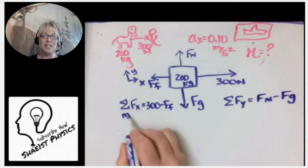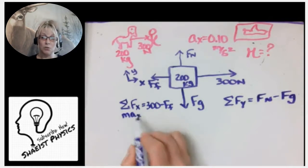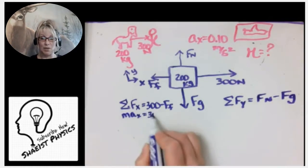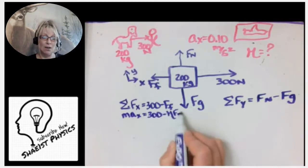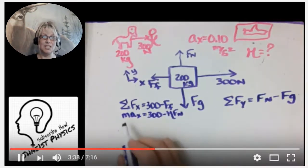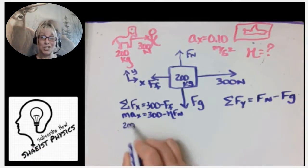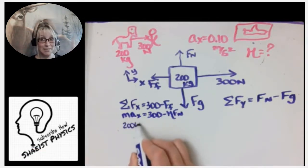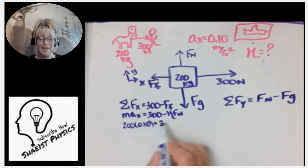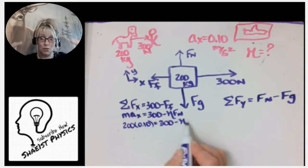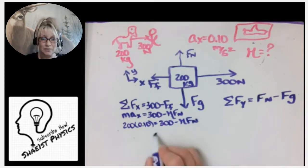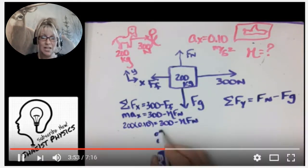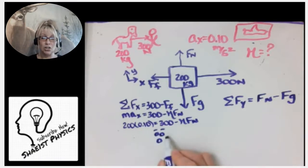And that means 300 newtons is positive and the force of friction is negative because it's going to the left. The same thing with the y direction—normal force is positive because it's going up, gravity force is negative because it's going down. Now what we're going to do is say the sum of all forces in the x direction. Newton told us is the same thing as mass times acceleration in the x direction.